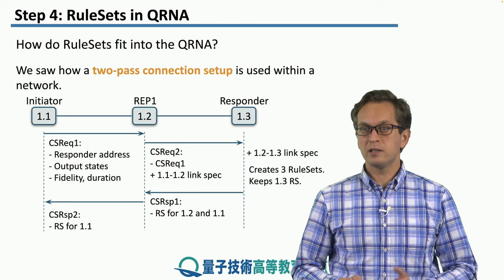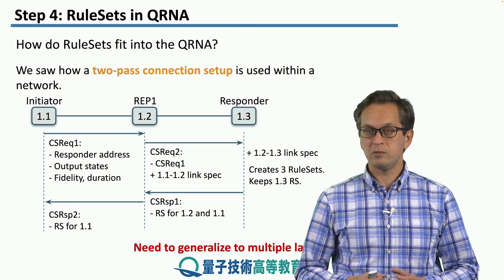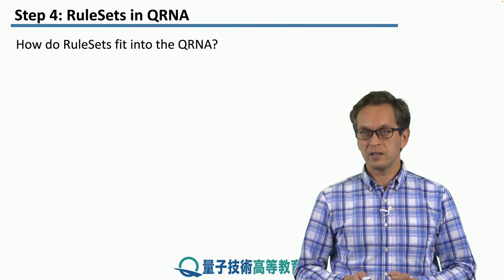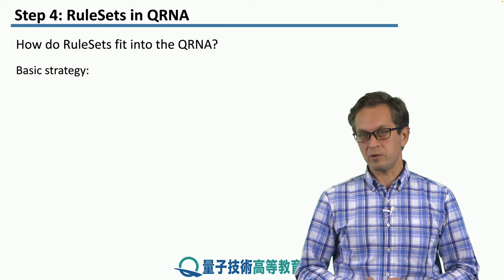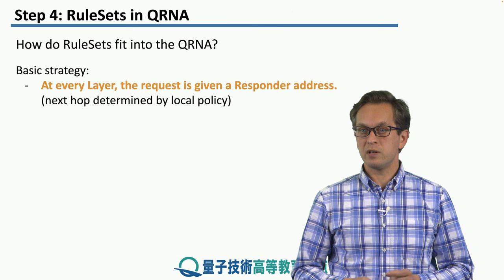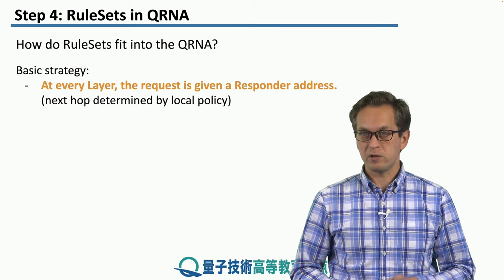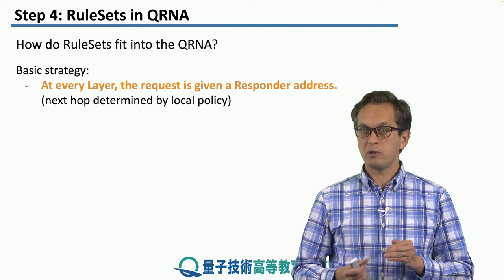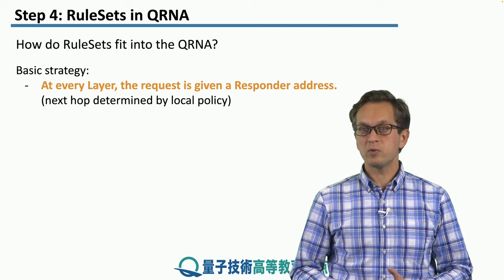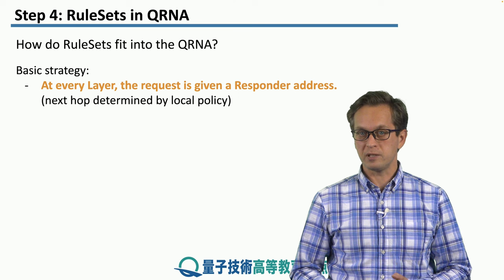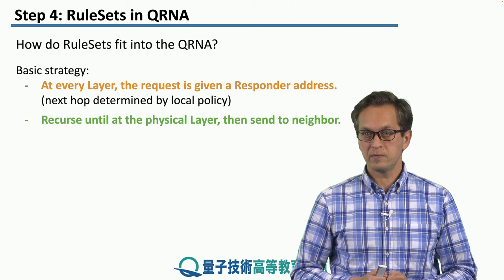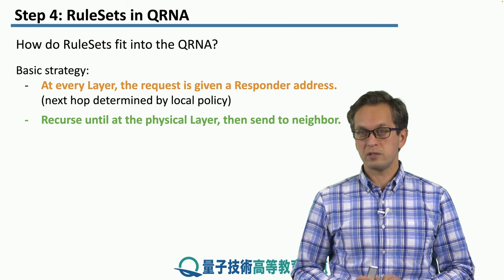However, this strategy only works at a single layer, so we need to generalize this to multiple layers. This is going to be the basic strategy that we're going to use. At every layer, the request is given a responder address — so there isn't a single responder, there's going to be multiple responders, one for every layer. The next hop will be determined by local policy. Then we recurse until we hit the physical layer, and then we send the request to the neighbor.